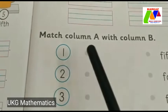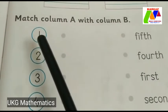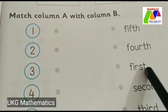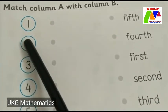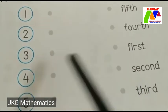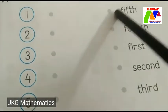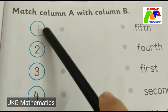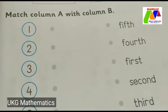Match the column A with column B. First one — number one, that is which position? First position. Very good. Next, number 2 — that is second position. Then number 3 — third. Number 4. Then number 5 — fifth. Here we can see some numbers; match the correct position.